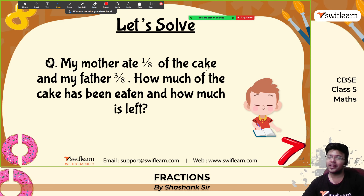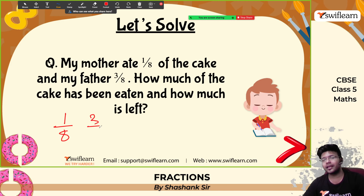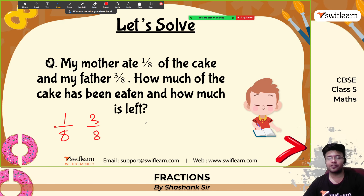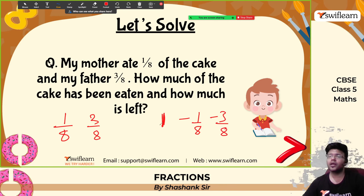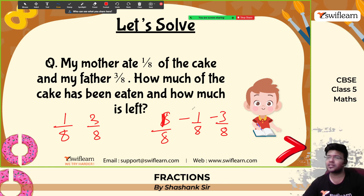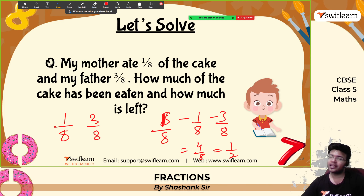Next word problem: My mother ate one-eighth of the cake and my father ate three-eighth of the cake. How much cake has been eaten and how much is left? Let 1 represent the whole cake. So 1 minus 1 by 8 minus 3 by 8 = 8 by 8 minus 1 by 8 minus 3 by 8. 8 minus 1 is 7, 7 minus 3 is 4. So 4 by 8, which is 1 by 2 — half of the cake is left.